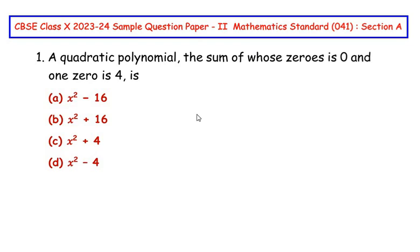Now this question is from polynomials chapter. A quadratic polynomial, the sum of whose zeros is zero and one zero is four. In this question we have to find out the equation of the quadratic polynomial. The sum of the zeros is given as zero and one of the zero or one of the root is given as four.